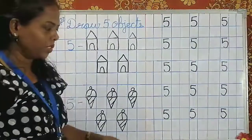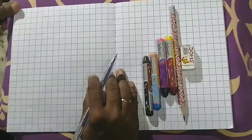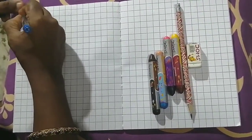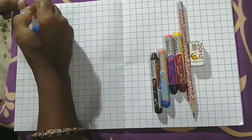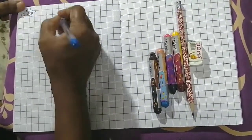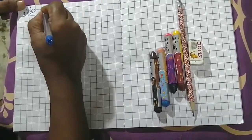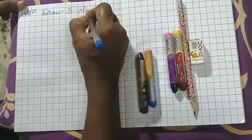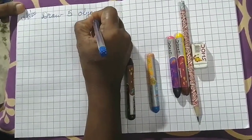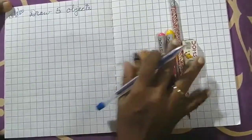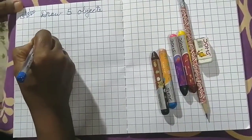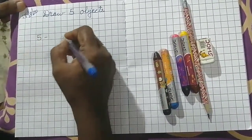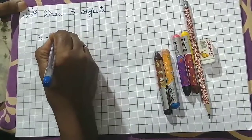Now let's do it in the notebook, children. First, what do we do? We write the date. And then the heading: Draw 5 objects. Parents, please help the children to write the headings. And now, number 5. What did I teach you? We have done hearts.